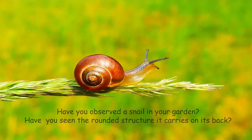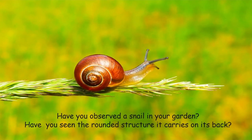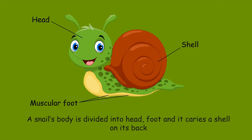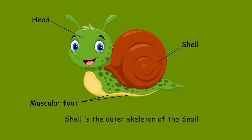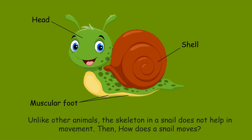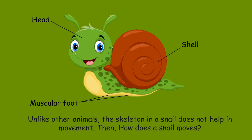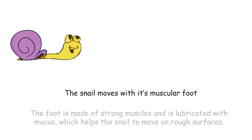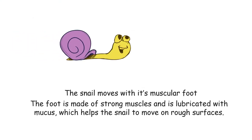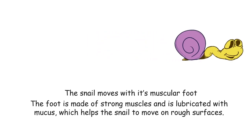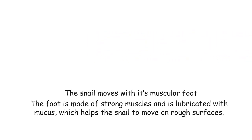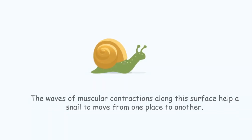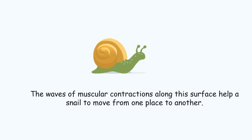Have you observed a snail in your garden? Have you seen the rounded structure it carries on its back? A snail's body is divided into a head and foot, and it carries a shell on its back. The shell is the outer skeleton of the snail. Unlike other animals, the skeleton in a snail does not help in movement. The snail moves with its muscular foot, which is made of strong muscles and is lubricated with mucus that helps the snail move on rough surfaces. Waves of muscular contractions along this surface help a snail move from one place to another.